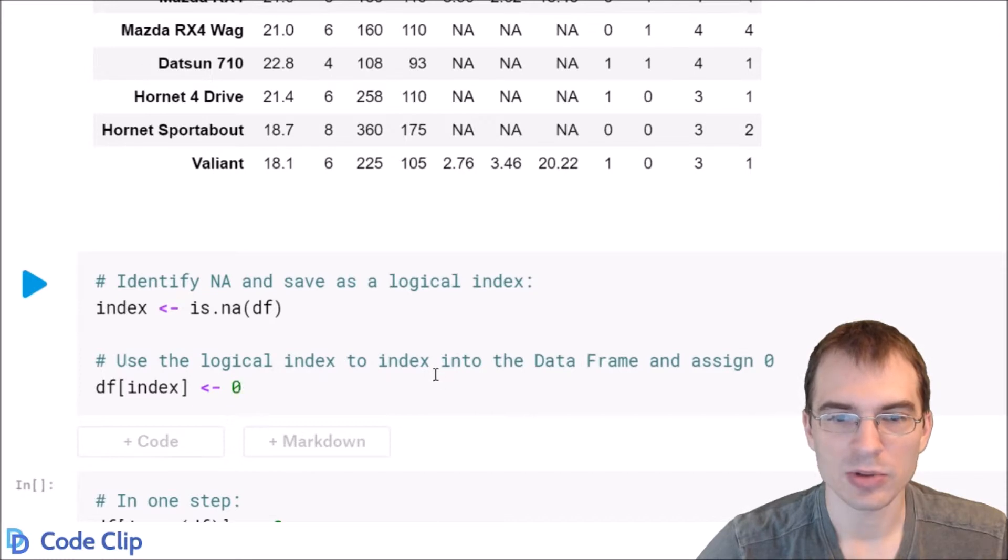Now to fill NA values, you just need to first identify all the NA values by making a logical index. So that's what we're doing here, is.na on the data frame. That creates a logical index that identifies where all the NAs are, and then you simply use that index to index into the data frame, and you assign those positions the value. So you assign zero, and now we've set all those to zero.